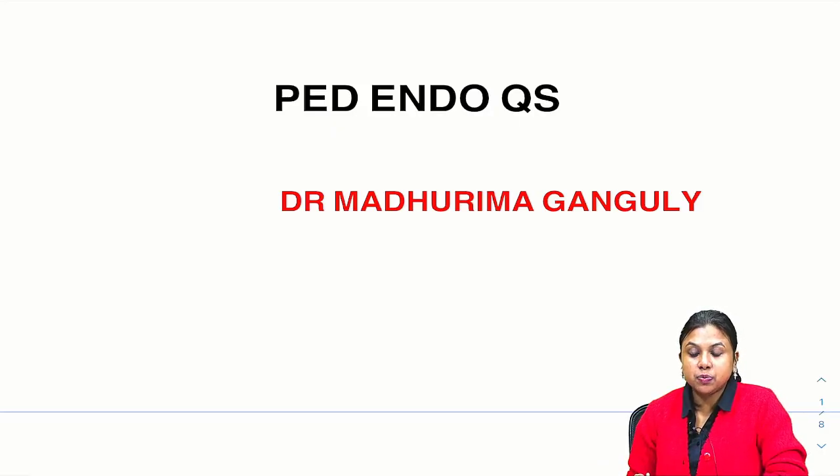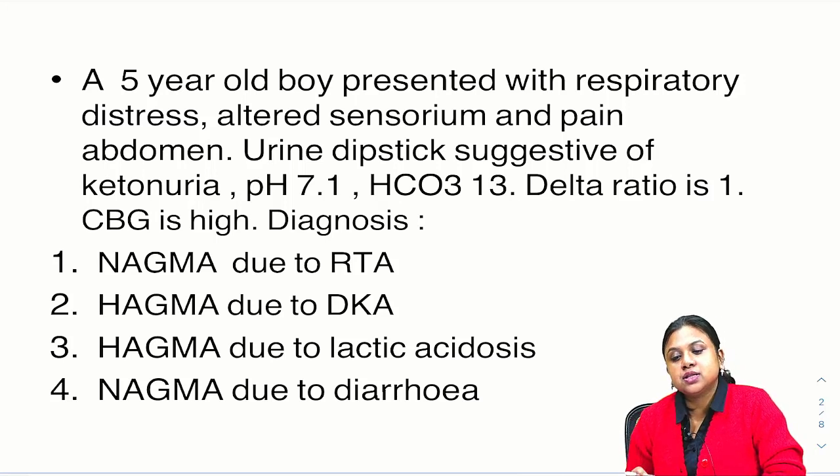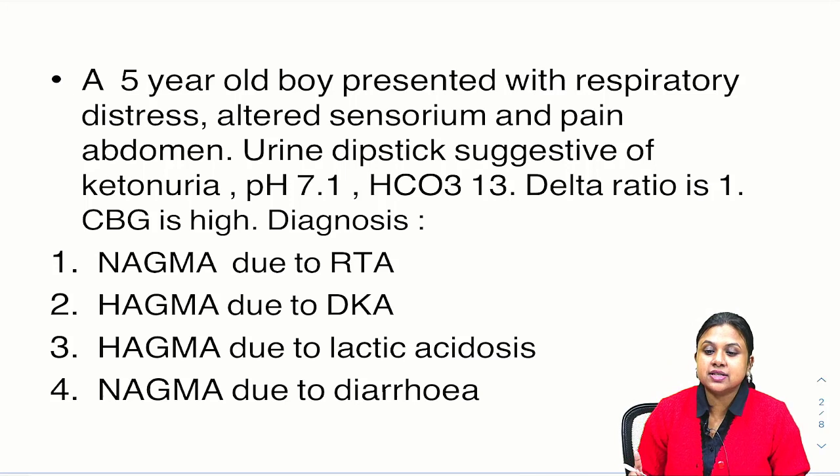We'll be discussing one pediatric endocrinology question. A five-year-old boy presented with respiratory distress, altered sensorium, and pain abdomen. Urine dipstick is suggestive of ketoneuria. pH is 7.1, bicarb is 13, delta ratio is 1, and CBG is high.